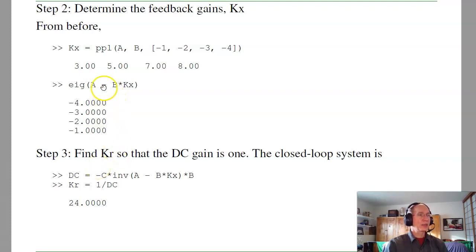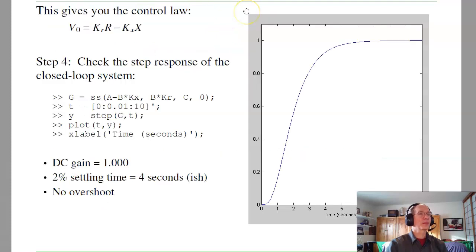The third step: once I find KX, I can find KR to make the DC gain 1. Without KR, the DC gain is this. Pick KR to be 1 over the DC gain. KR is 24. Again, stuff we've done before. In MATLAB, I can check the step response in the fourth order system. And it's just like I expected. I've got no overshoot, DC gain 1. Settling time is 4 seconds-ish, actually a bit more like 5 seconds, because the poles at 2, 3, and 4 slow it down. Pretty much, it's about what I want.